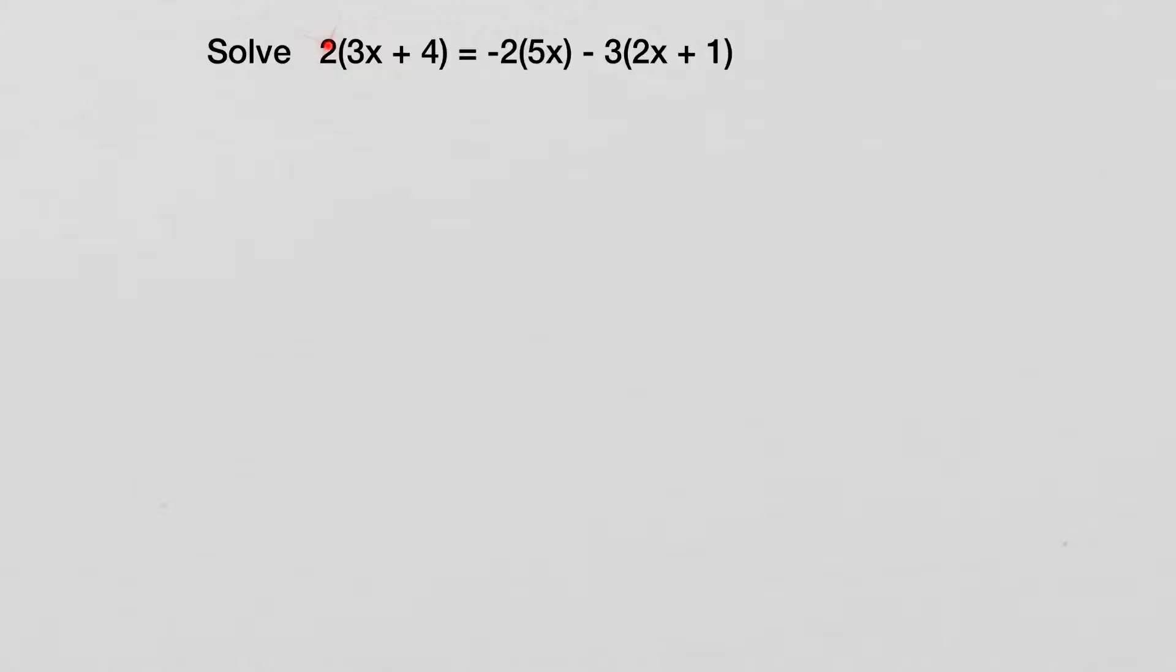So what that means is we're going to have to multiply this 2 into both the 3 and the 4, this negative 2 into the 5x, and this negative 3 into both the 2x and the 1. So let's get started with that. It'll make things pretty long, but sometimes we have to make things longer before we can simplify them.